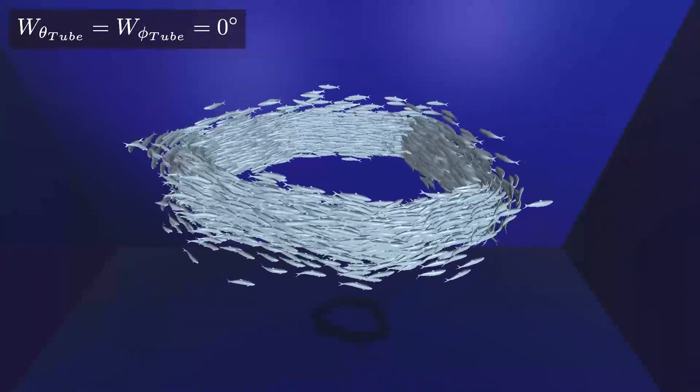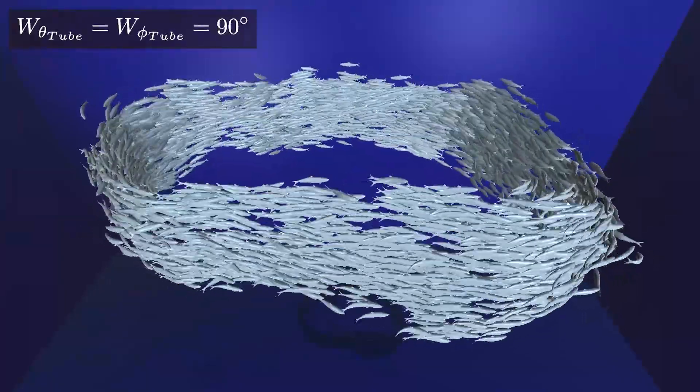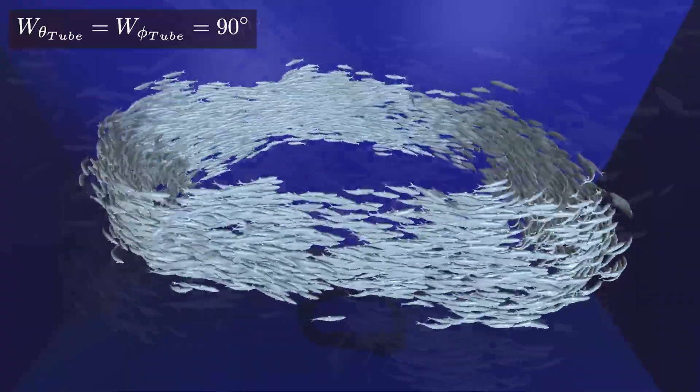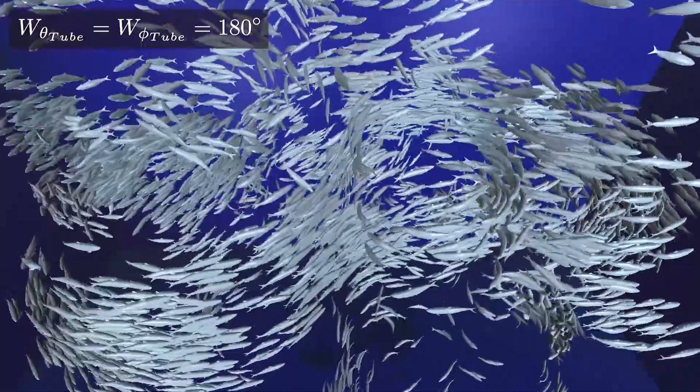Our method allows to determine how gently the virtual fish follows the tube course. By increasing the parameter, a reasonable variation occurs in the school of fish. By increasing the parameters even further, the school itself disperses.